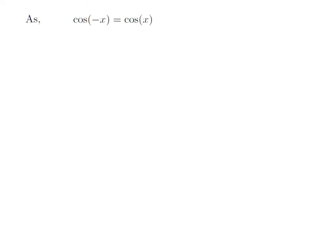As we know, the trigonometry identity cosine of minus x is equal to cosine of x.